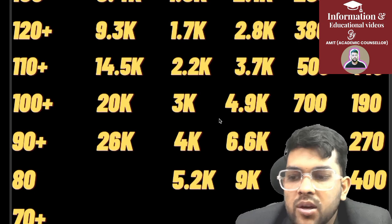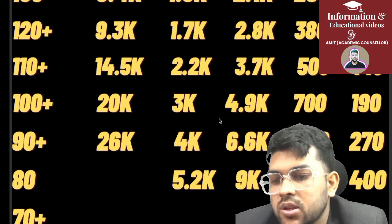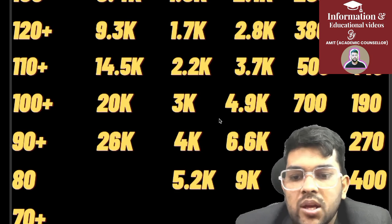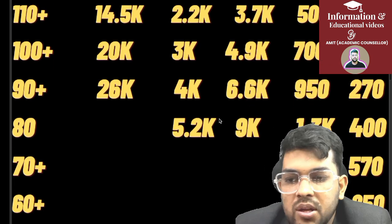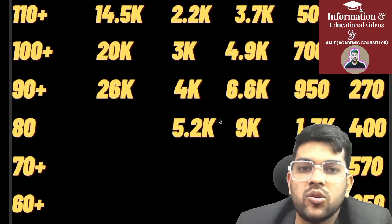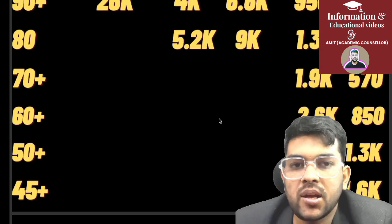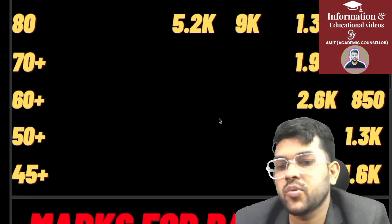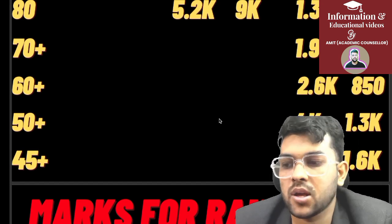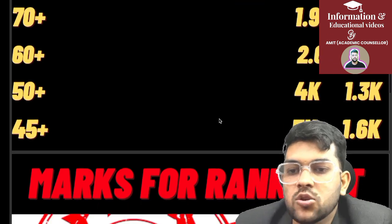For 80 marks, there is no use for General candidates as the cutoff will be around 90. For EWS: rank 5,200, OBC 9,000, SC 1,300, ST 400. For 70 marks, General and OBC categories are not applicable. SC rank around 1,900, ST 570. For 60 marks: SC 2,600, ST 850. For 50 marks: SC 400, ST 1,300. For 45 marks: SC 5,000, ST 1,600 — so at least 45 marks are needed for SC/ST.